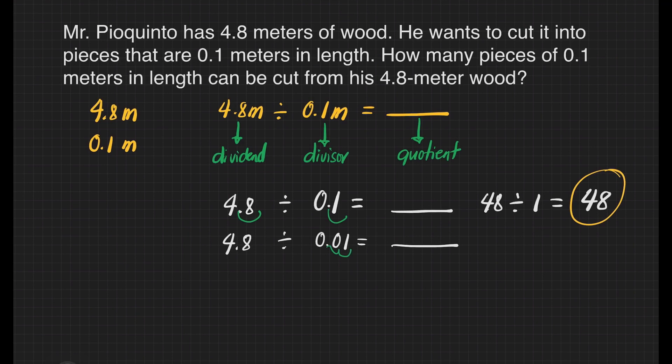We also need to do it to our dividend. It's going to be one and two. And for this, our division sentence now is 480 divided by one, and that gives us 480.